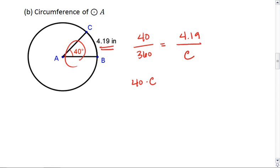I get 40 times C equals 360 times 4.19, which gives me 1508.4. C equals 1508.4 divided by 40, which gives me a circumference of 37.71 inches.